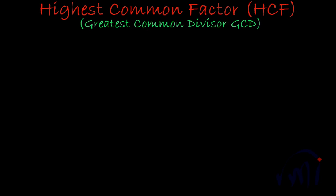To understand it better, let me take one example. Suppose if we have two numbers like 30 and 45. The highest common factor of these two numbers will be the largest number which can divide both 30 and 45 without leaving any remainder. Or you can say that HCF of two or more than two numbers is the largest possible number which divides all the numbers completely.